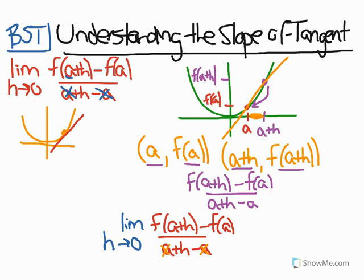So as h approaches 0 in this relationship, I get the slope of a tangent or the derivative at a because essentially you're taking the slope of these two points that you already know and bringing the points to the same point, which becomes the slope of a tangent line.